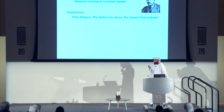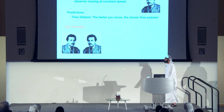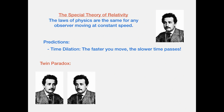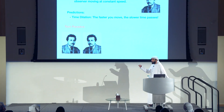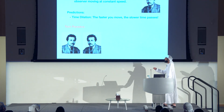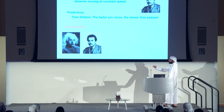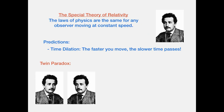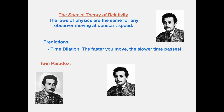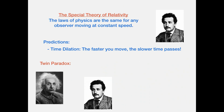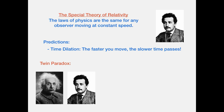This raises the famous twin paradox. If you consider two Einsteins and let one of them move far away and come back, the Einstein that did not move would have aged more. Time really runs differently depending on your state of motion.